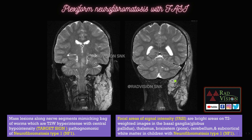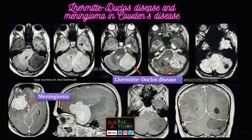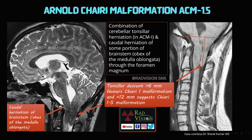This is the target sign, and in this case you can also see hyperintense lesions on T2 noted in the brainstem and in the cerebellum, which are nothing but FASI — focal areas of signal intensity. Both are classically seen in neurofibromatosis type 1. So this is a classical case of plexiform neurofibromatosis with FASI.